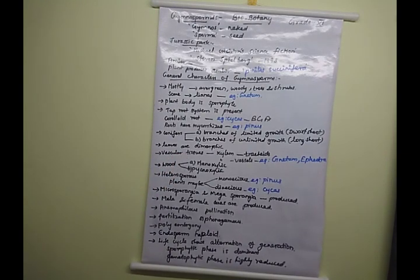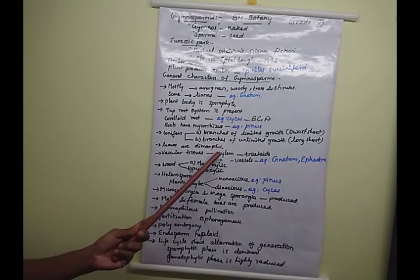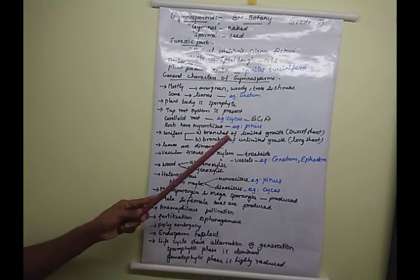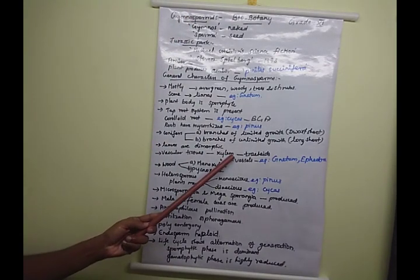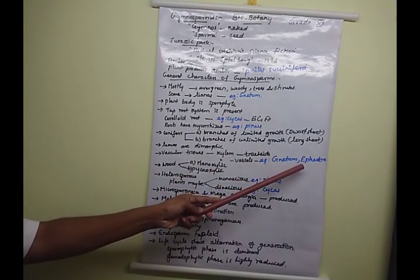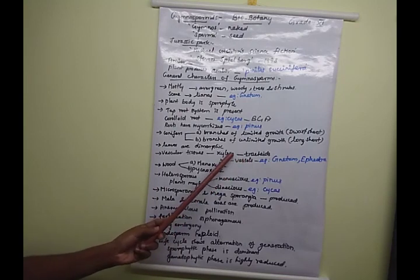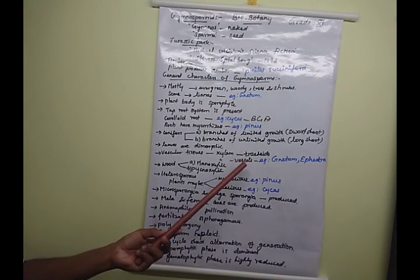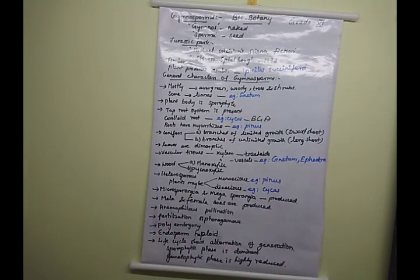Vascular tissues include xylem and phloem. In gymnosperms, the xylem elements are mainly tracheids. Xylem has four types: tracheids, xylem fibres, xylem parenchyma, and vessel elements. Most gymnosperm species have only tracheids. However, in two species — Gnetum and Ephedra — xylem vessel elements are also present, which are mostly found in angiosperms.